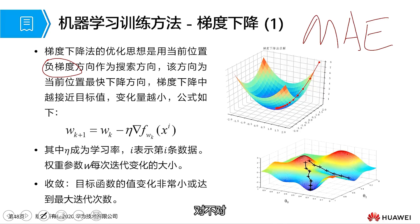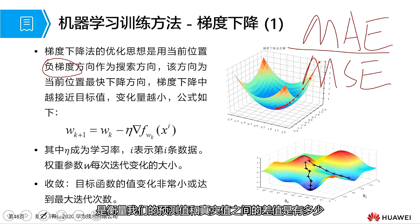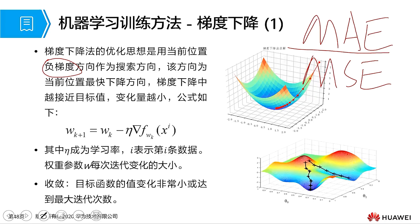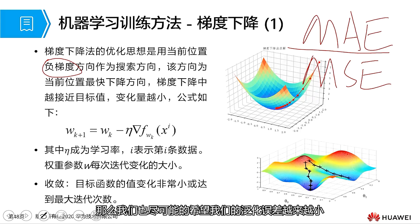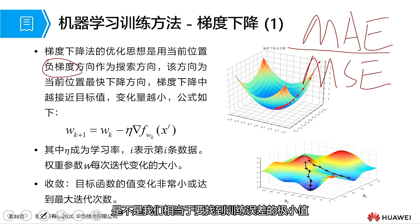MAE and also a metric called MSE measure the difference between our predicted value and the actual value. We said at that time we hope that this difference becomes smaller and smaller — training error is decreasing. We want to make this training error smaller and smaller, so we need to find the minimum value of this training error — that's the lowest point.